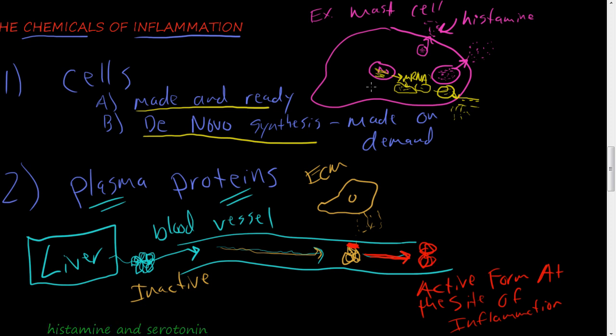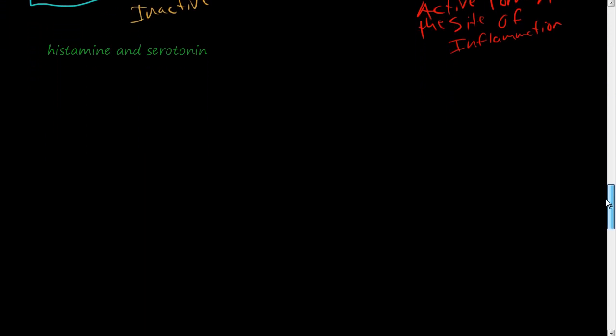I want to talk first about the cell-derived components. Of the cell-derived chemicals of inflammation, there are two main ones: histamine and serotonin.